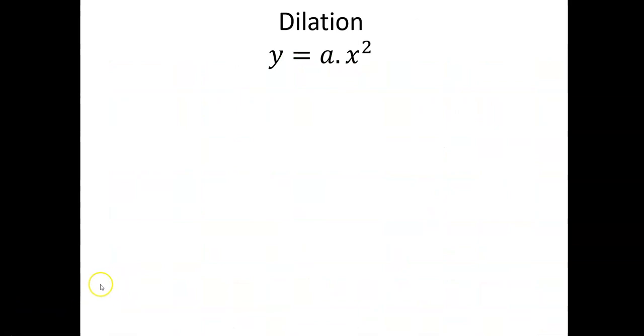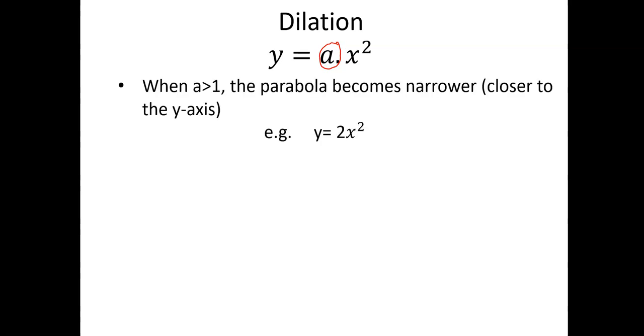First of all, let's look at a dilation. When the graph is dilated, we are looking at the number in front of the x squared in the rule. In general, we call this value a, so we're looking at the rule as a times x squared. When the value of a is greater than 1, the parabola will become narrower, or closer to the y-axis.